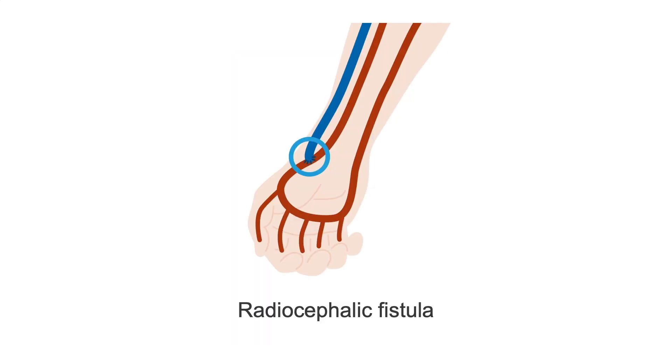For this reason, the most desired fistula is a radiocephalic fistula, which is made from the radial artery and the cephalic vein at the wrist. This is also known as a Brescia-Cimino fistula, after its inventors.